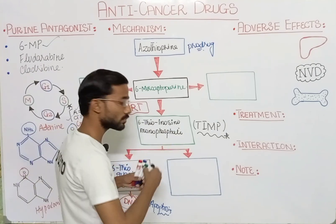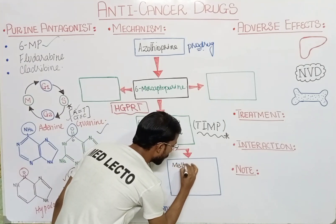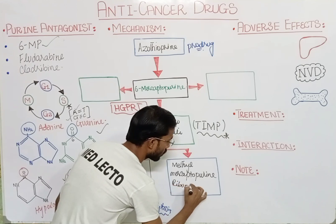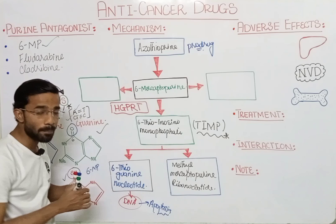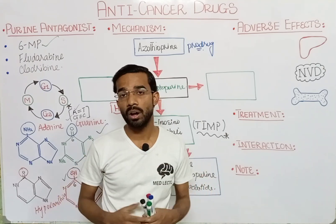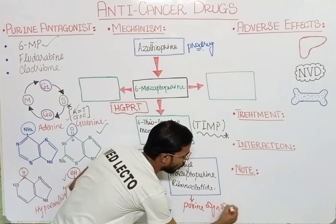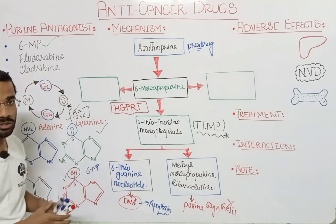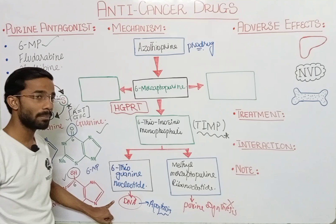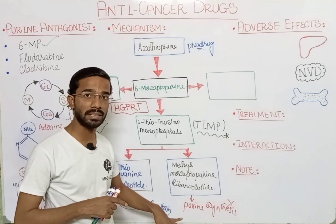The other pathway goes towards methylmercaptopurine ribonucleotide. This compound inhibits the de novo synthesis of purines — the new synthesis that happens in our body. So it blocks purine synthesis. If there is no purine, there is no synthesis of DNA, and there is no division of the cell. So by inhibiting purine synthesis, I can stop cell division.